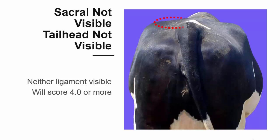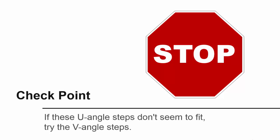If neither ligament is visible, the cow will score 4.0 or more. If you can clearly see the ligaments described here, you may have assigned the cow to the wrong group at step one. Try going through the steps for cows with a V-angle between the hooks and pins that were discussed earlier in this presentation.